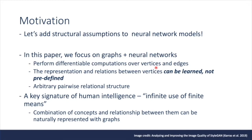This paper argues that we should add structural assumptions to neural network models. Specifically, they focus on making use of graph structures with neural networks. Graph neural networks perform differentiable computations over vertices and edges, and crucially, the representations and relations between vertices can be learned, not predefined. So graph neural nets can have arbitrary pairwise relational structure. Coming back to the phrase 'infinite use of finite means,' combinations of concepts and relationships between them can be naturally represented with graphs.